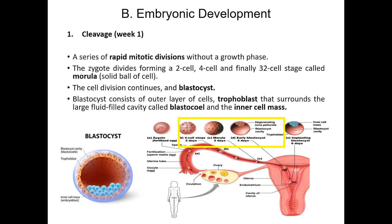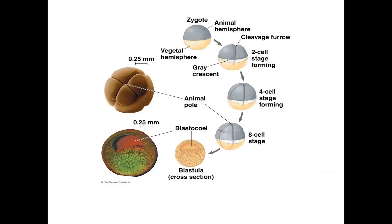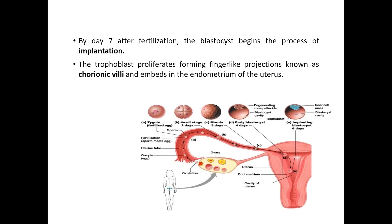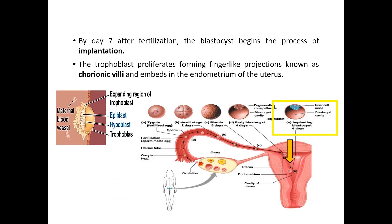The blastocyst consists of an outer layer of cells called trophoblasts that surrounds the large fluid-filled cavity called the blastocoel and the inner cell mass. This diagram shows the cleavage stage undergone by the zygote, forming multiple cells without growing in size. In mammals, blastula is known as blastocyst. By day 7 after fertilization, the blastocyst begins the process of implantation. The trophoblasts proliferate, forming finger-like projections known as chorionic villi and embed into the endometrium of the uterus.